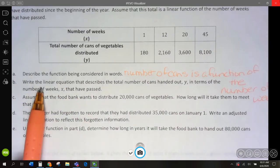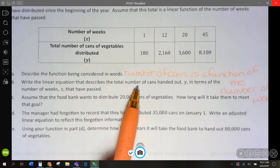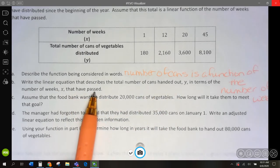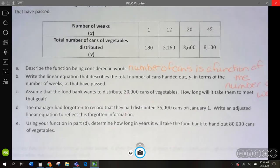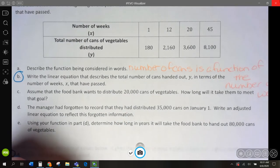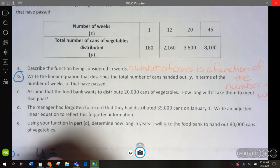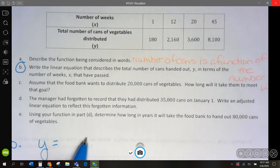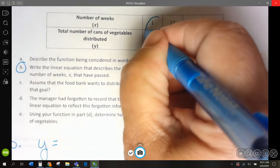Now they want us to write the linear equation that describes the total number of cans y in terms of the weeks x that have passed. So I'm going to come down here for b. Y is going to equal, is dependent upon or is a function of the number of weeks. But how many do we get in a week?